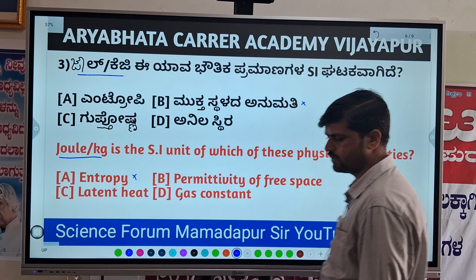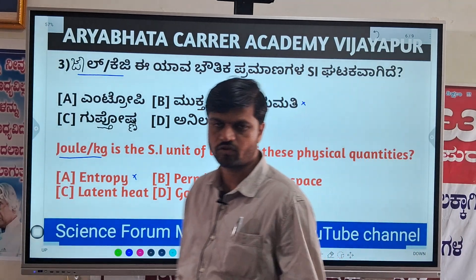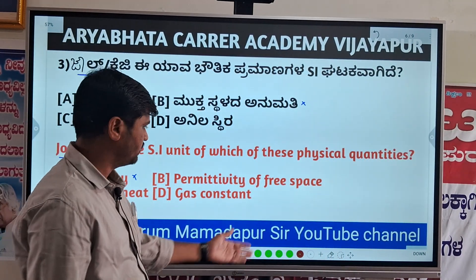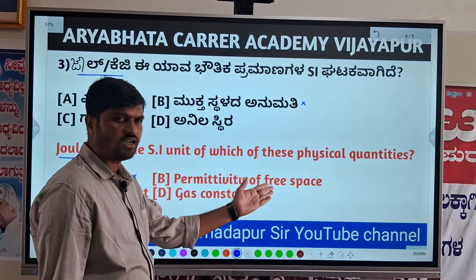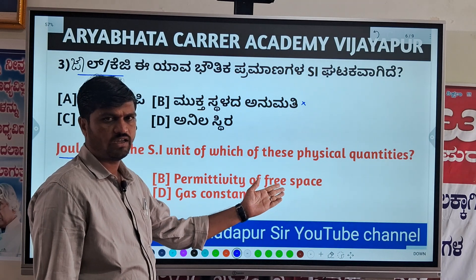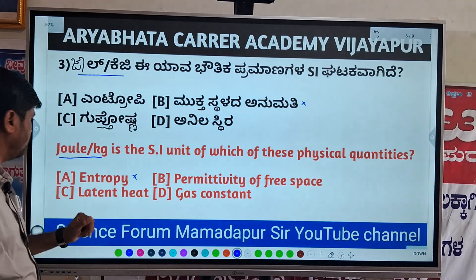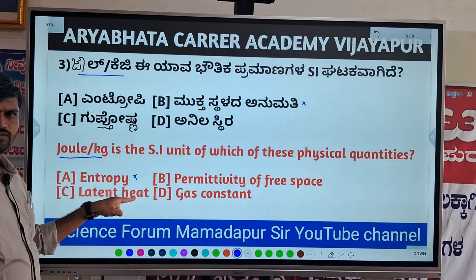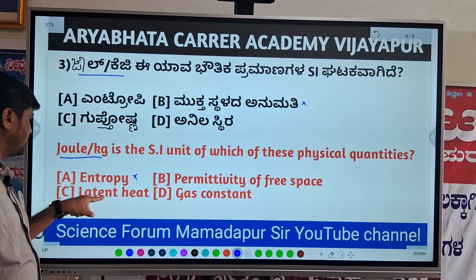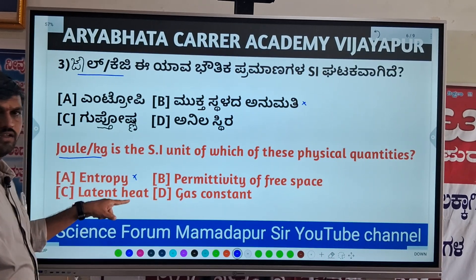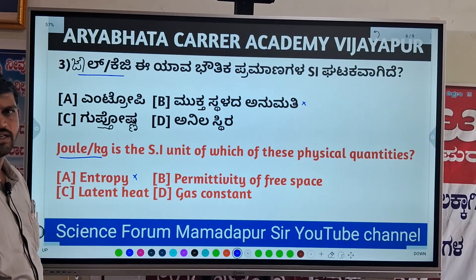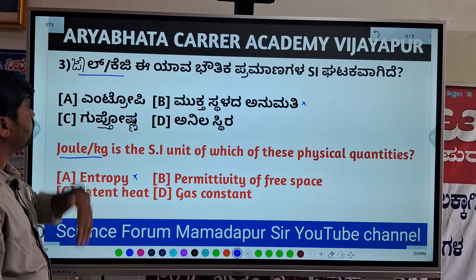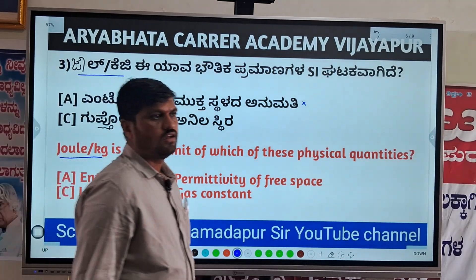The permittivity of free space is also not a unit, because these are constants. Then, latent heat — yes, latent heat is measured in Joule per kg. This is the SI unit.